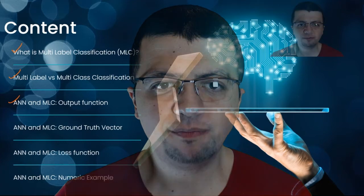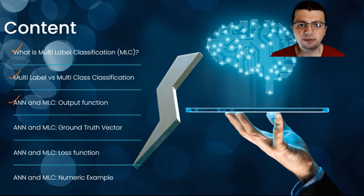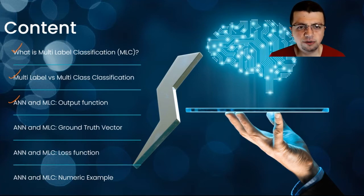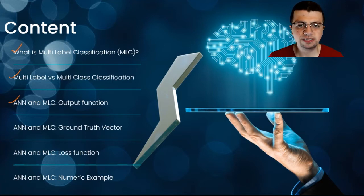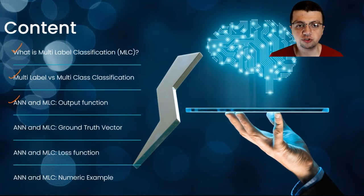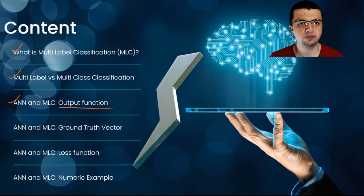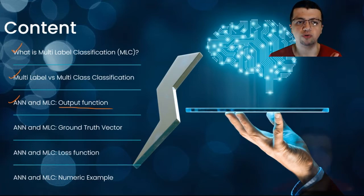Hello everyone, and welcome to ML Done. So far we have been talking about multi-label classification in our series. We've talked about multi-label versus multi-class classification, and we talked recently about the output function for multi-label classification. Now, in this video, we're going to be talking about the ground truth vector.